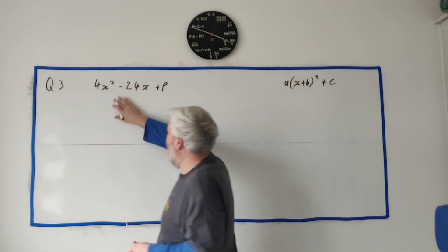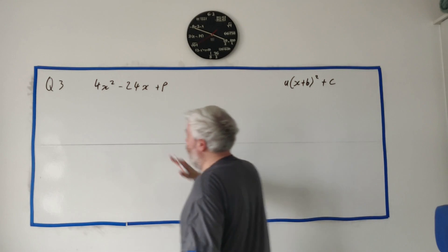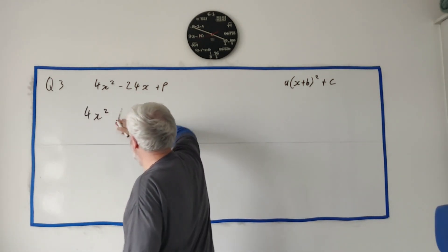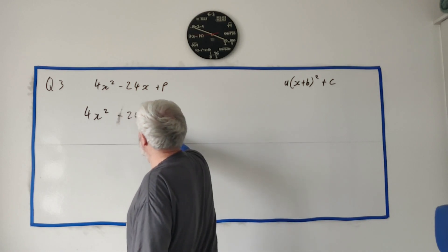Anyway, let me go ahead and try and solve this. Okay, so we want to write this again, but make it look like this, or complete the square. So how do we complete the square? Sorry, that should be a minus 24x.